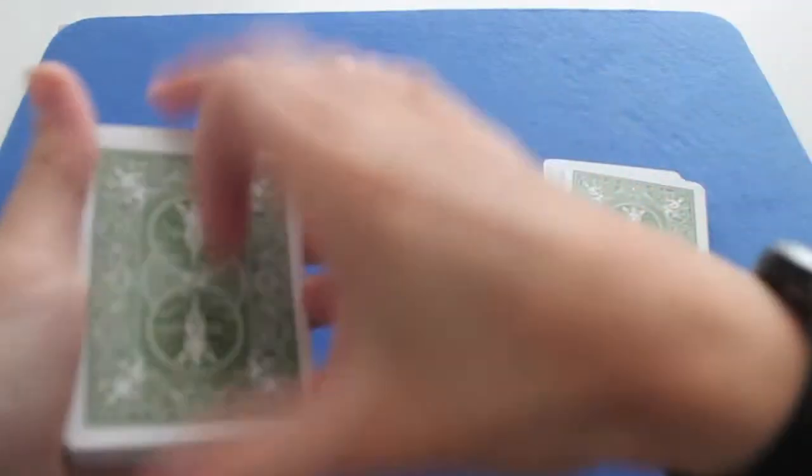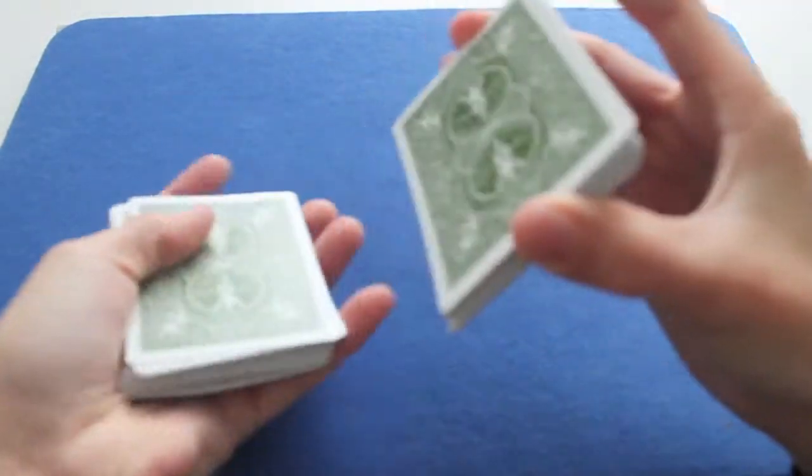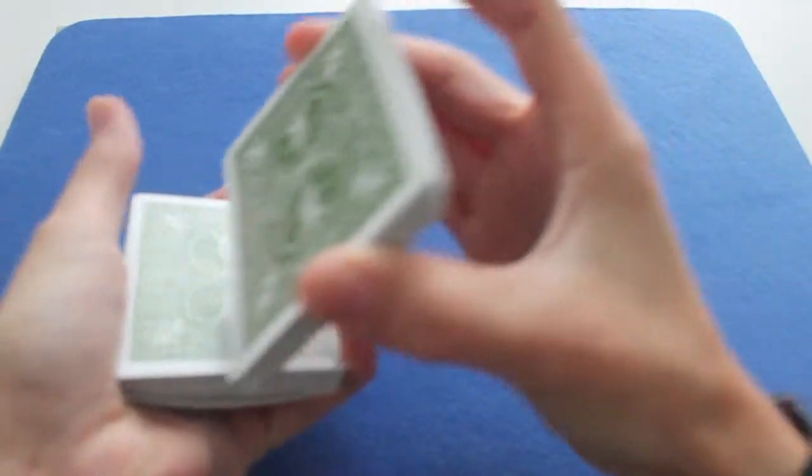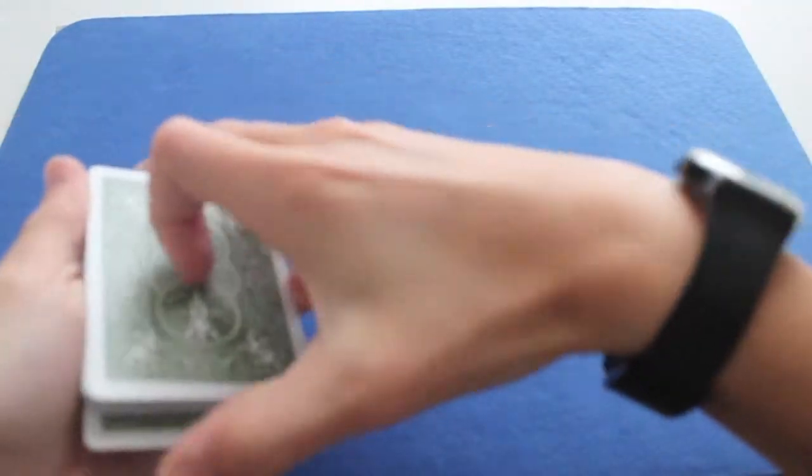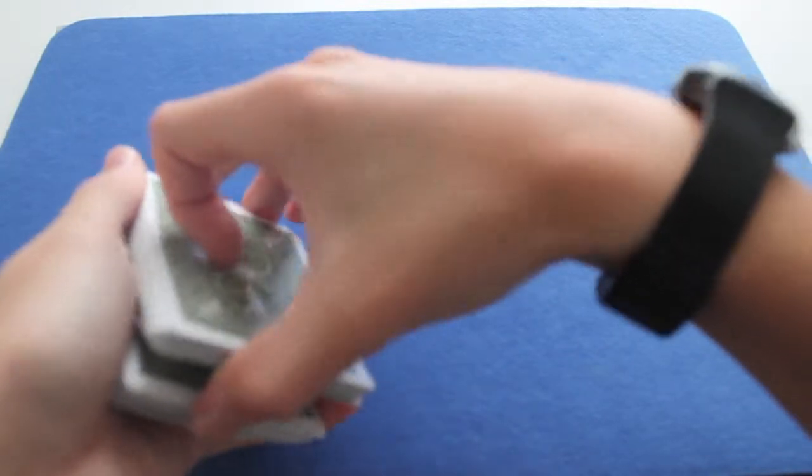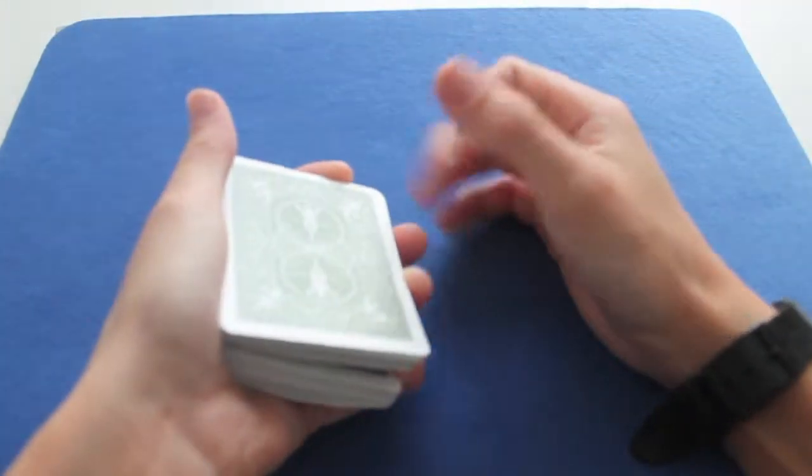And they say stop whenever they want. Let's say there. You put the joker there. And you're going to do a full shuffle. You take one card, two cards. You out-jog the third one. And you continue normally. Like that. You square everything up except for the out-jogged card. And you push it in by lifting up, which allows you to catch a pinky break. Like in the stop shuffle video.